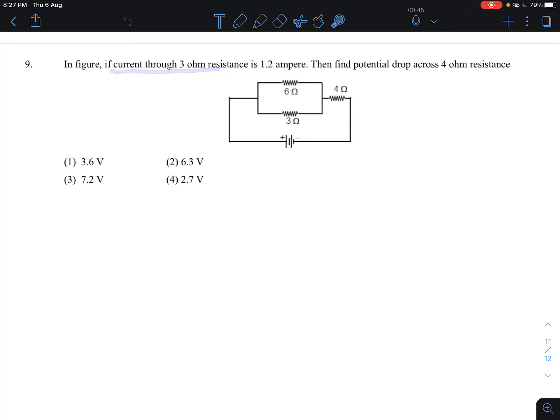In this figure, current flowing through 3 ohm resistance is 1.2 ampere. Find the potential drop across 4 ohm resistance.